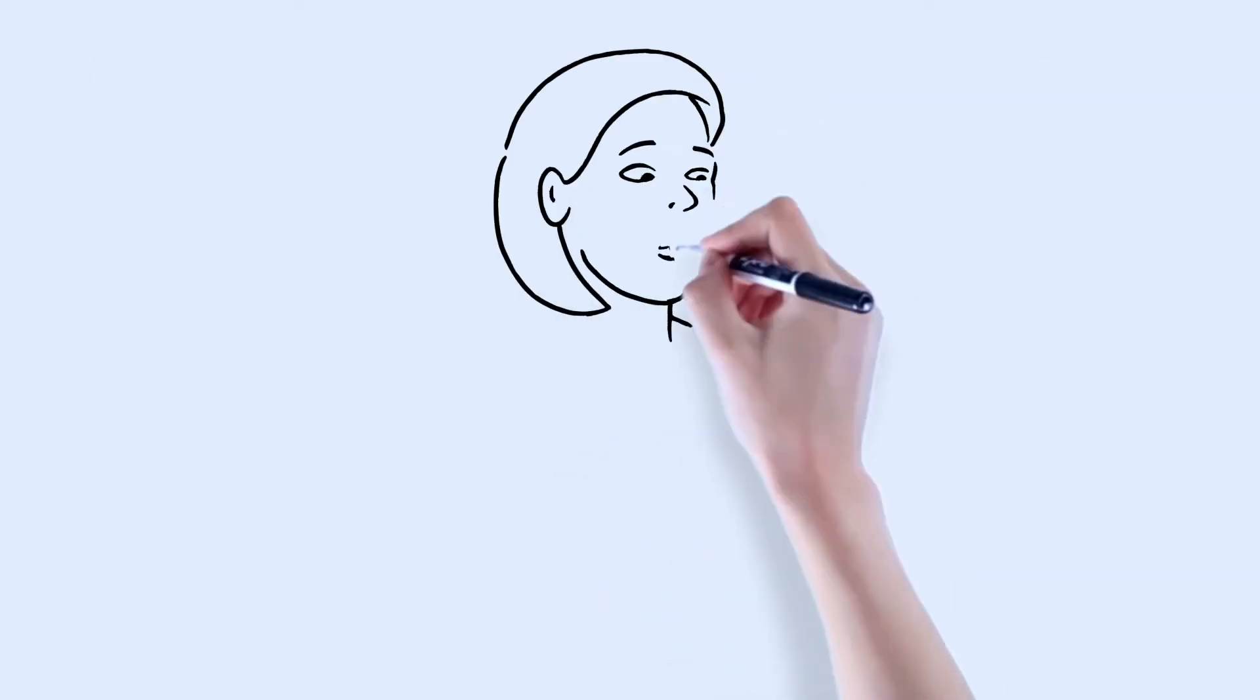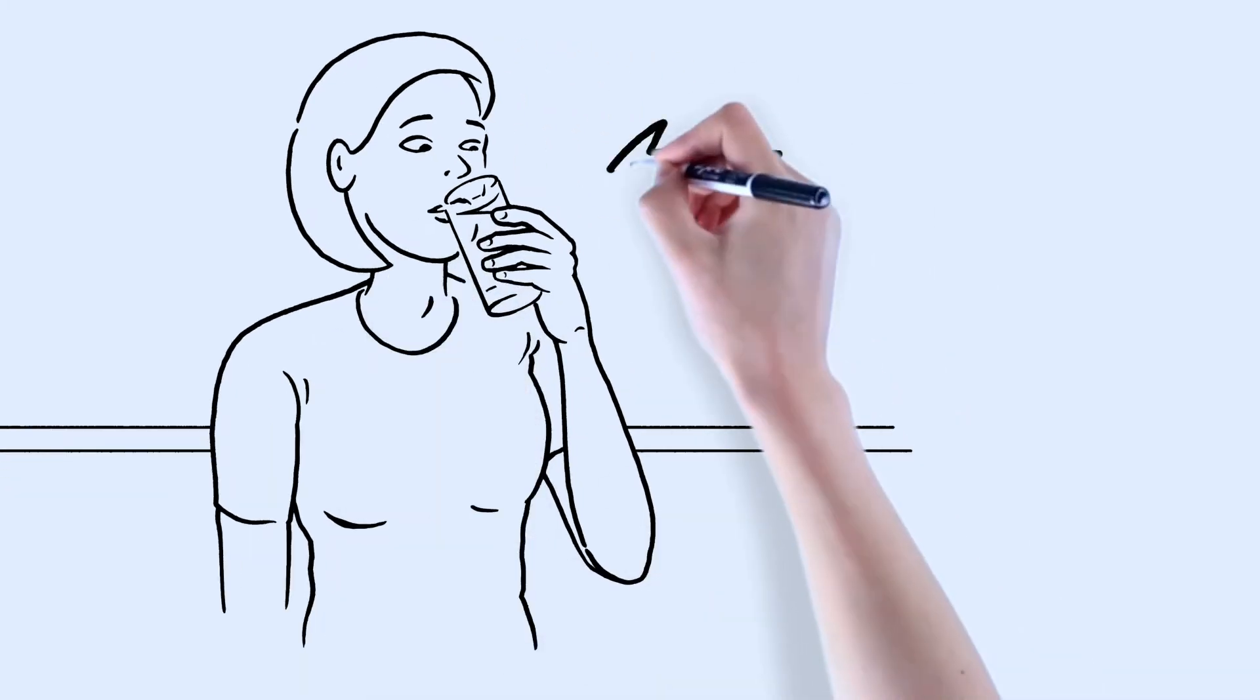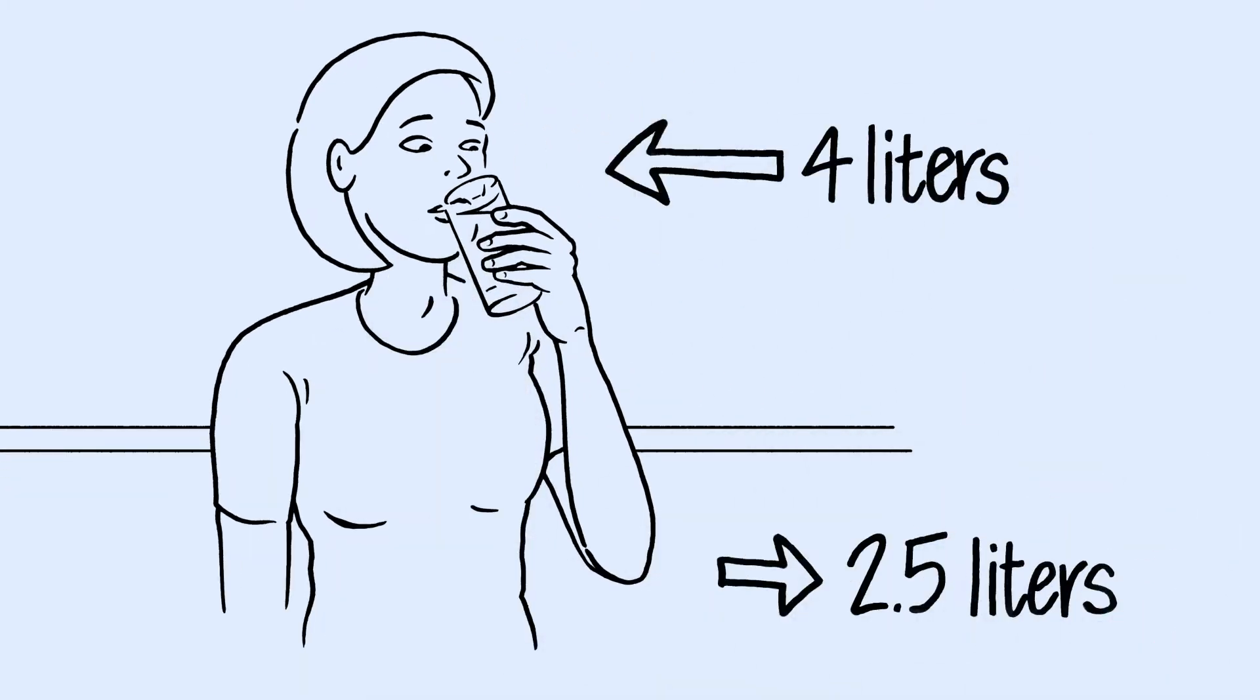The American Urological Association recommends that people with cystinuria drink at least four liters every day with a goal of excreting two and a half liters of urine.